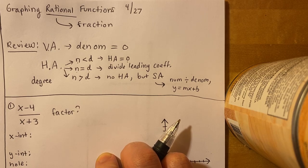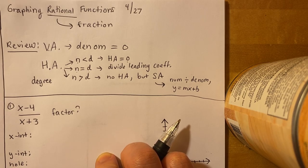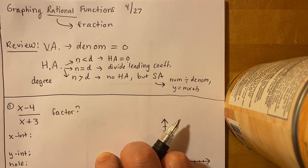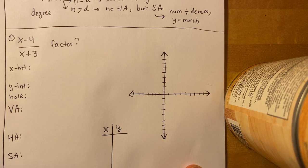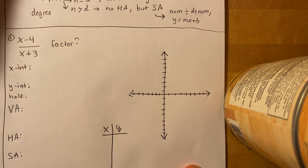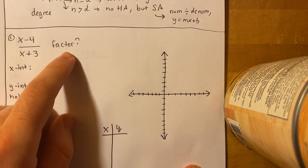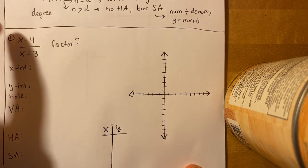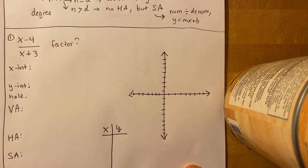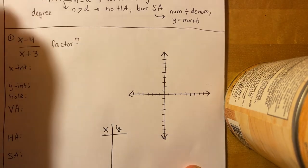The slant asymptote is usually in a linear y = mx + b form. Without further ado, let's graph. Our first example is (x − 4) over (x + 3). Our first step is to see if we can factor it — and no, we can't do anything further than that.